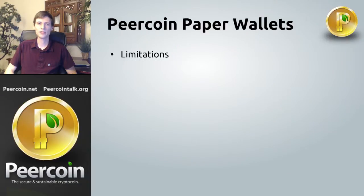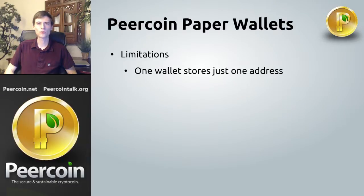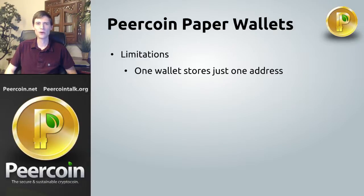First let's talk about some of the limitations of paper wallets. One paper wallet will store just one PureCoin address. It's recommended to use a separate address for each transaction so that someone you send PureCoins to can't link that back to other transactions you've made on the PureCoin blockchain. If you wanted to do this with paper wallets you would need a lot of paper wallets and your life would get complicated quickly.